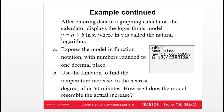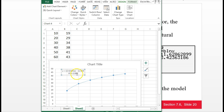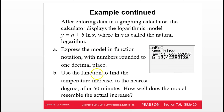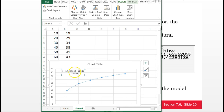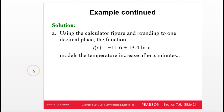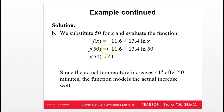The logarithmic model from Excel gives the same result as your calculator would, just presented differently. Excel outputs the model as approximately -11.63 times ln(x) plus 13.4. To use the model for part B — the temperature after 50 minutes — we plug in 50 for x. You can just type it directly into your calculator to get about 41 degrees after 50 minutes. It does a very good job since the R-squared was so close to 1.